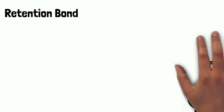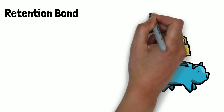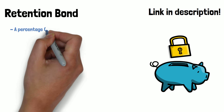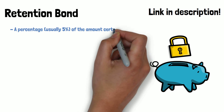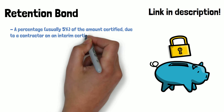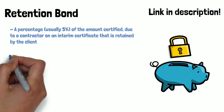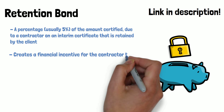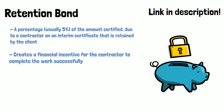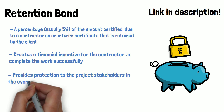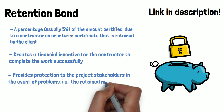Retention bond. We actually have a video about retention on our channel, which we've left a link to in the description. Briefly, a retention bond is a percentage — usually 5% of the amount certified due to a contractor on an interim certificate — that is retained by the client. The purpose is to create a financial incentive for the contractor to complete the work successfully and provide protection to project stakeholders in the event of problems, i.e. the retained money can be used as an insulation for that risk.